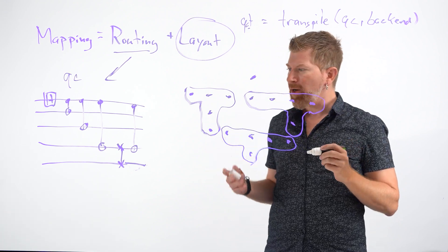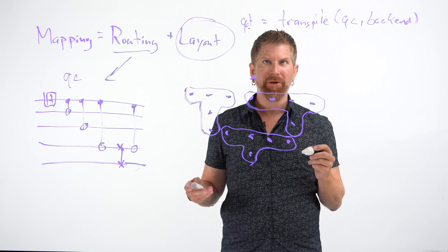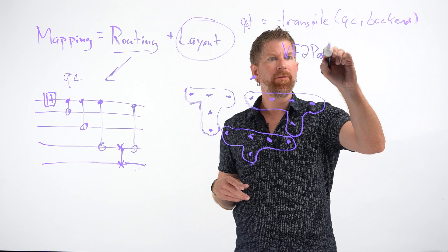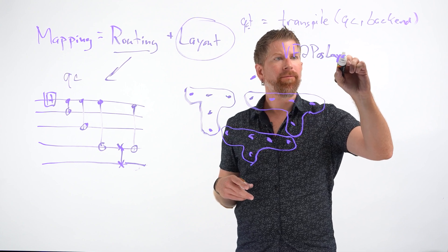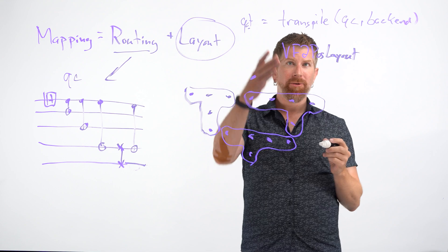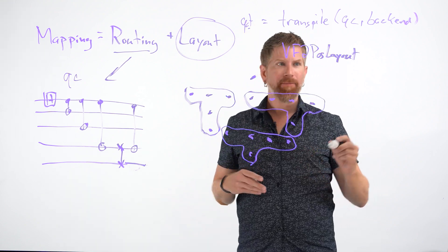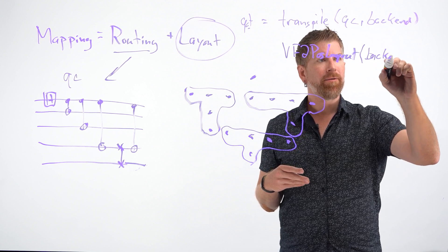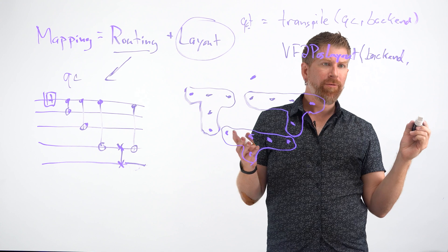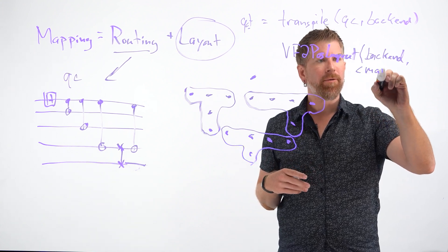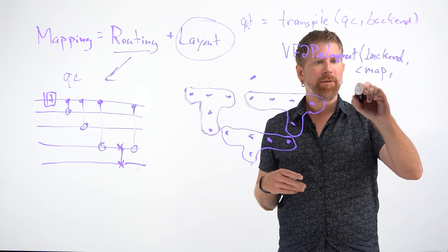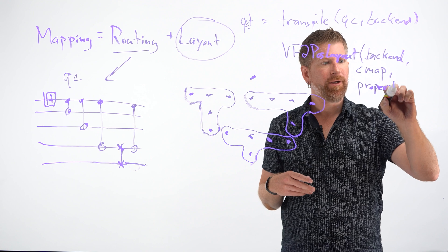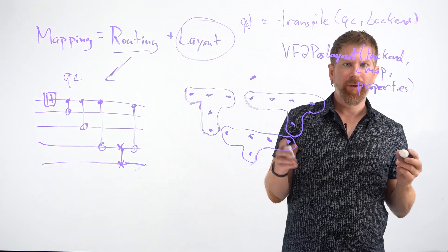And then what we'd like to do is see what kind of layouts we can get that are matching. And so for that, we can use VF2 post layout, which takes in a transpiled circuit that we just constructed. And there are some features you can give to it. For example, for this layout method, we need to know the backend. Or we could also specify the coupling map and the properties that we can get from the backend.